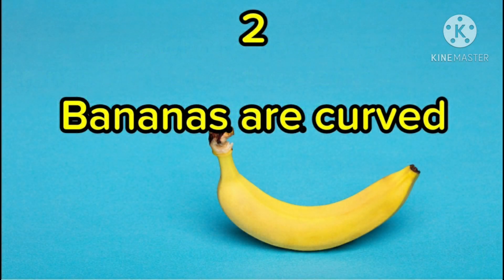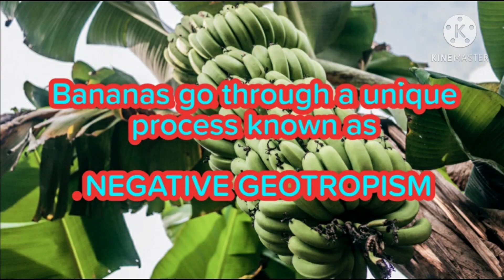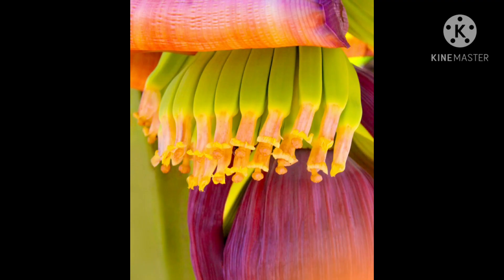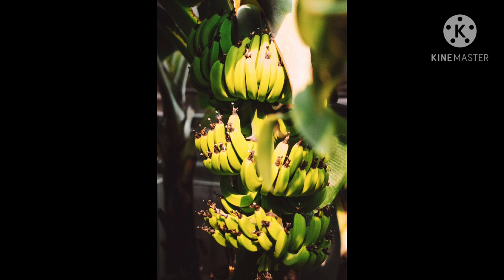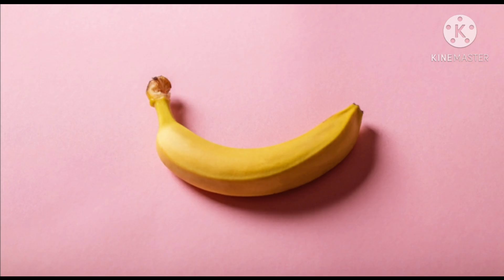Bananas are curved. Bananas go through a unique process known as negative geotropism. Instead of continuing to grow towards the ground, they start to turn towards the sun. The fruit grows against gravity,